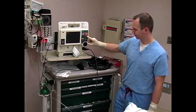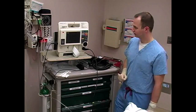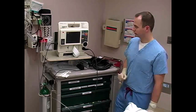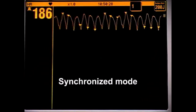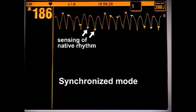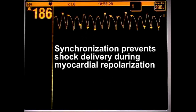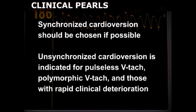At this point, you must decide whether to use synchronized or unsynchronized cardioversion. In synchronized mode, the machine senses the patient's native rhythm and only discharges the electric current after a preset time delay following a QRS complex. This prevents shock delivery during myocardial repolarization, which, if it occurs, may lead to ventricular fibrillation. Synchronized cardioversion should be chosen if possible.